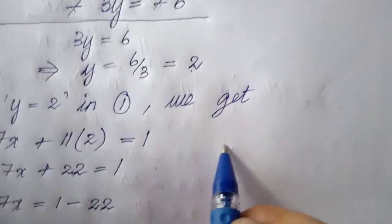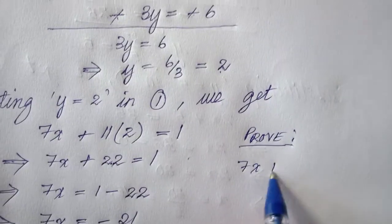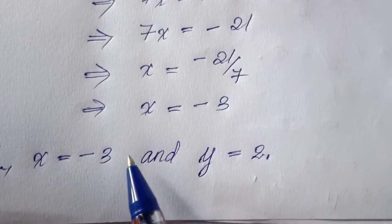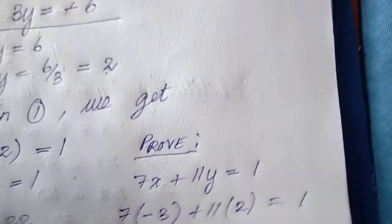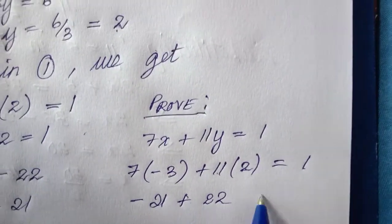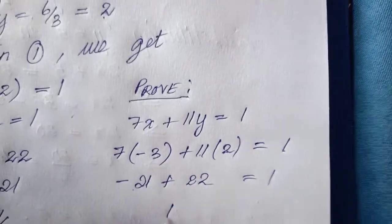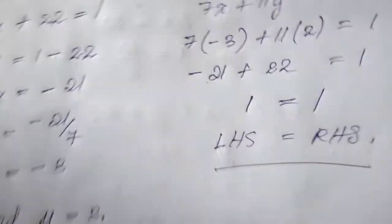Let me verify the answer using equation 1: 7x plus 11y equal to 1. Substituting x equal to minus 3 and y equal to 2: 7 times minus 3 plus 11 times 2 equal to 1. That gives minus 21 plus 22. Since 22 is the higher number, the result is plus 22 minus 21, which is 1. Left-hand side equals right-hand side, confirming the answer is correct.